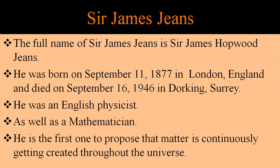Sir James Jeans — his full name is Sir James Hopwood Jeans. He was born on September 11, 1877 in London, England, and died on September 16, 1946 in Dorking, Surrey. He was an English physicist as well as a mathematician, and is the first one to propose that matter is continuously being created throughout the universe.